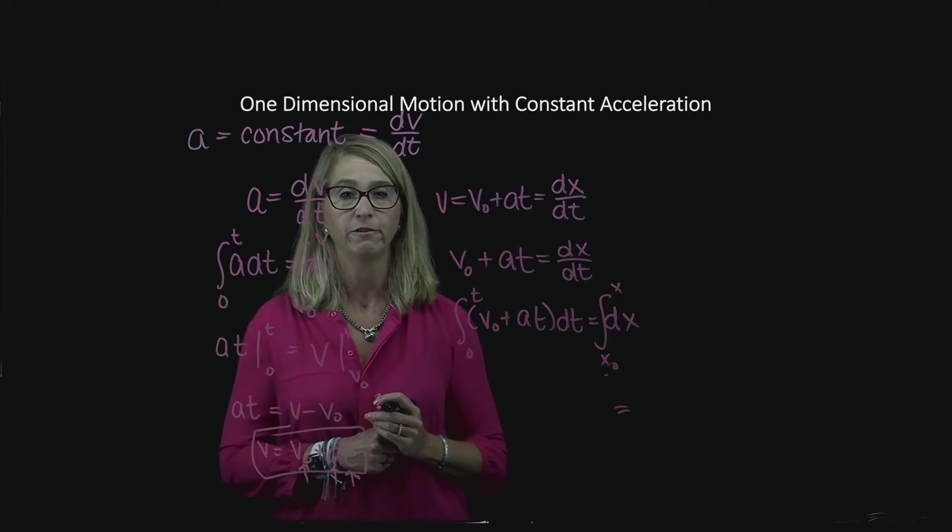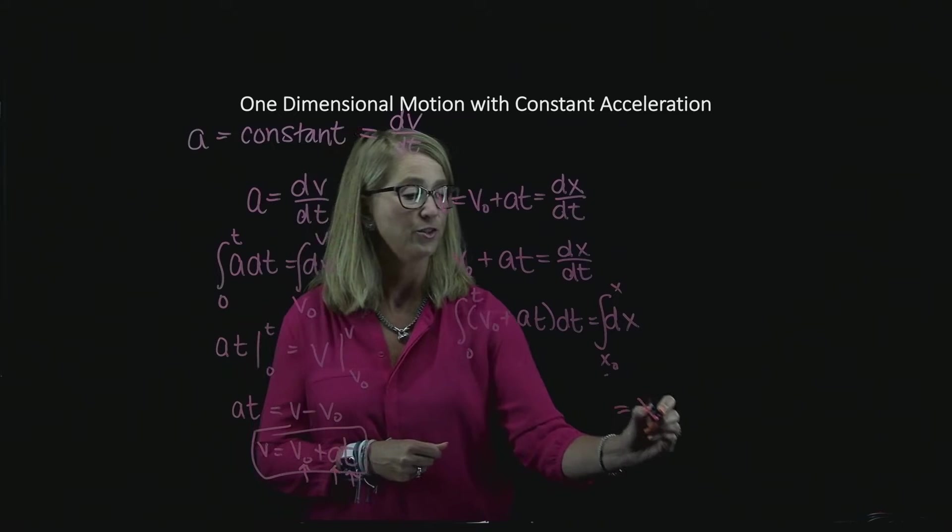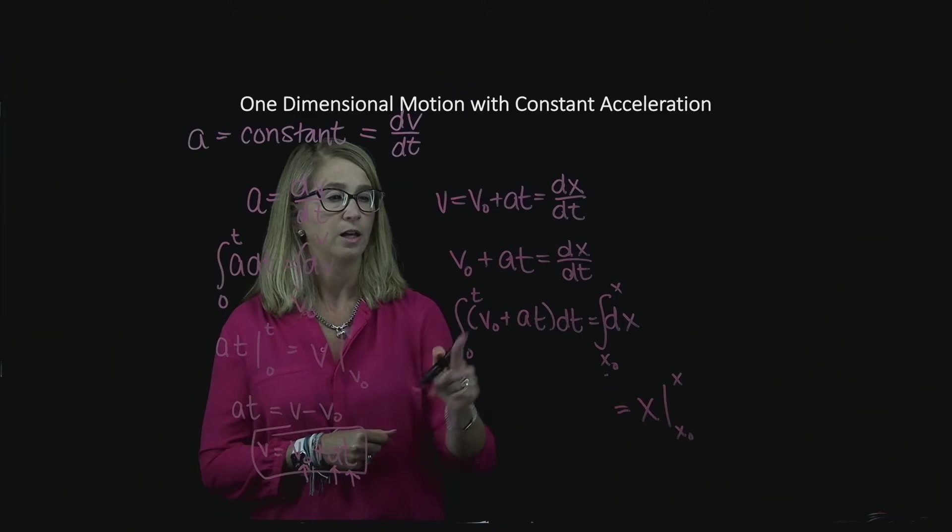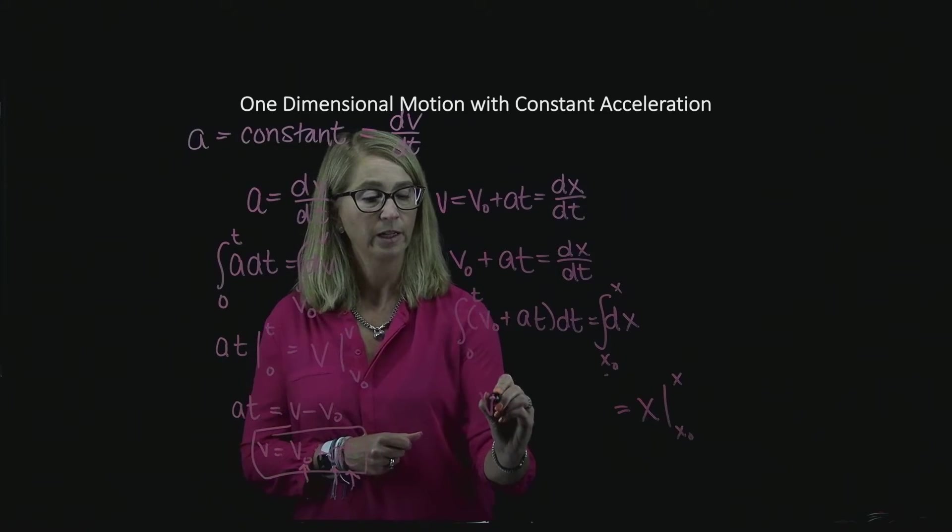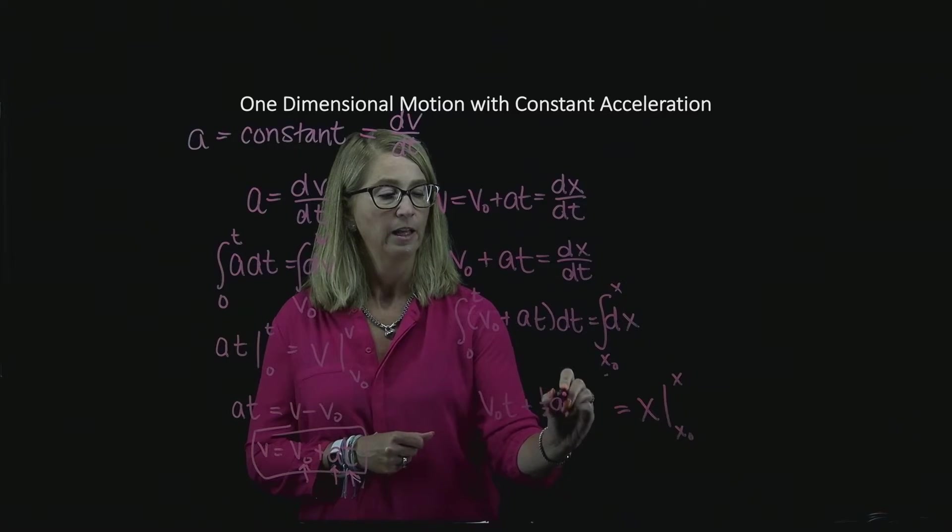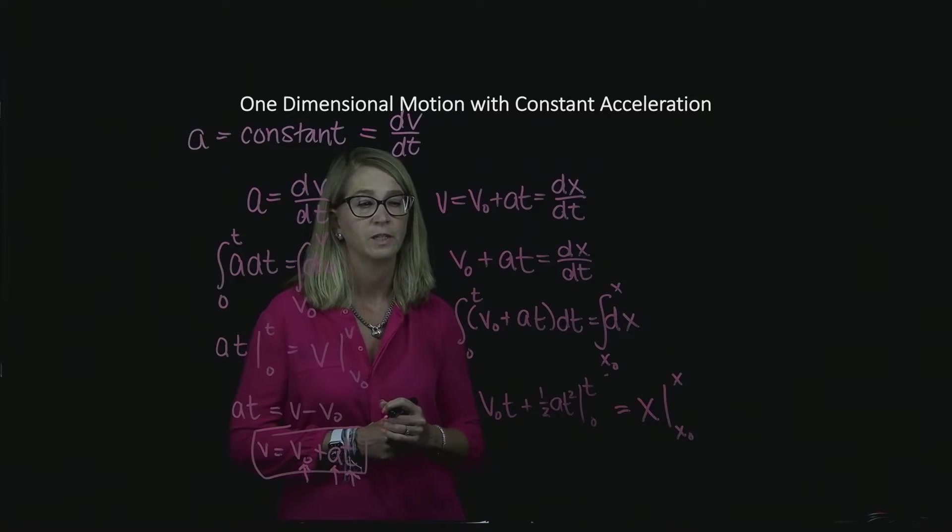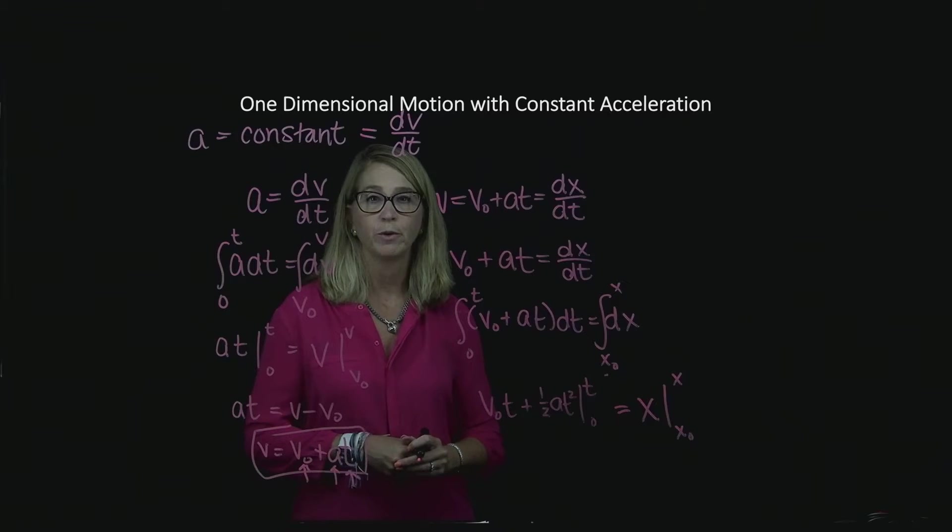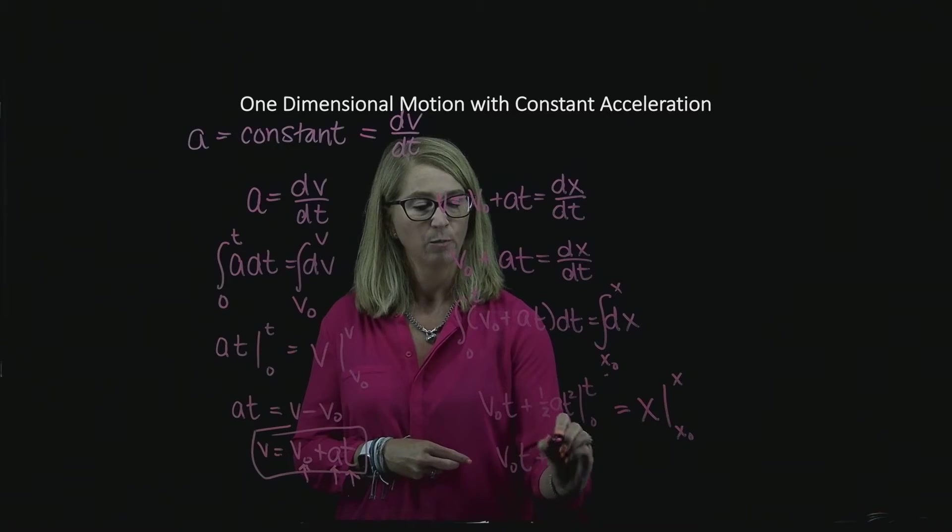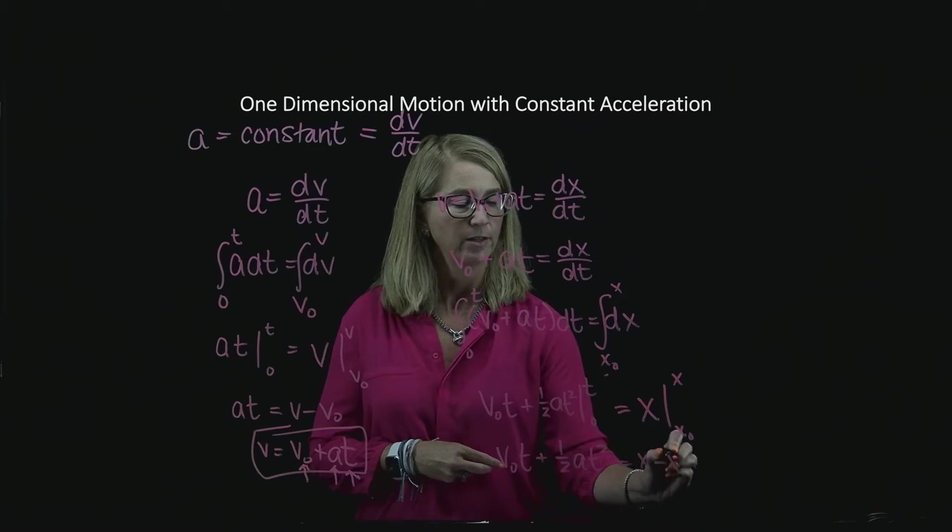Let's do the right hand side for me first. And that's integrating dx because that one's easier. I just get x. I'm going to evaluate it at x naught and x. On the other side, when I'm integrating over time, I get v naught t plus 1 half at squared. And those are evaluated at t and 0. When I evaluate both of these sides at their limits, I get v naught t plus 1 half at squared is equal to x minus x naught.